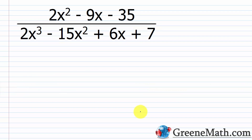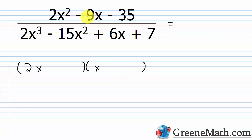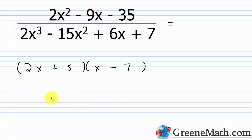For the last problem, we have (2x² - 9x - 35) over (2x³ - 15x² + 6x + 7). Starting with the numerator using reverse FOIL — 2 is prime, so it's (2x)(x). For 35, the factor pairs are 1×35 or 5×7. Using -7 and +5: the outer term is 2x times -7 = -14x, and the inner is 5 times x = +5x; combined, -14x + 5x = -9x. So the numerator factors as (2x + 5)(x - 7). Now pause the video and try to factor the denominator using grouping.